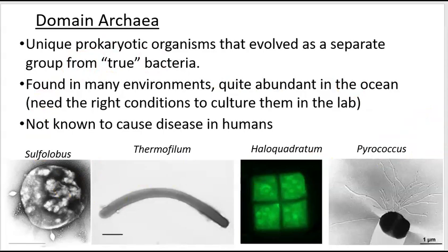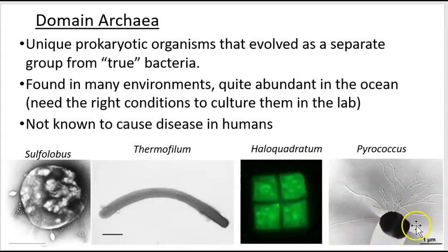The archaea are similar to bacteria in size — in the 1 to 15 micrometer range — and come in a variety of shapes: coccus, bacillus, or spiral. But we also see unusual shapes, like the long filament of Thermophilium and the four-cell arrangement of Haloquadratum. Pyrococcus, which grows at extremely hot temperatures, has a tuft of flagella coming off the coccus — making it lophotrichous.